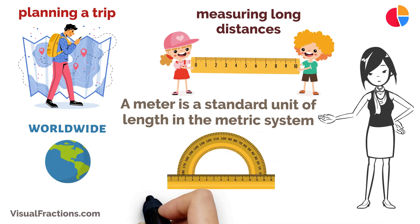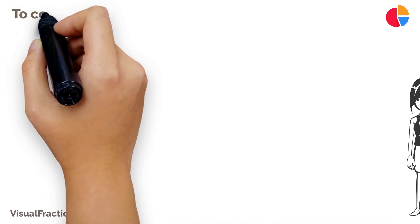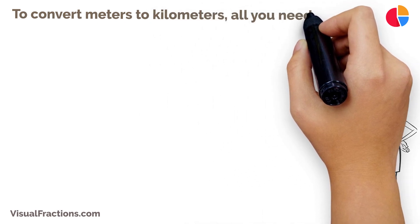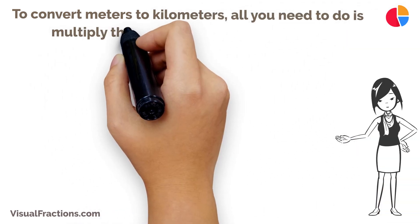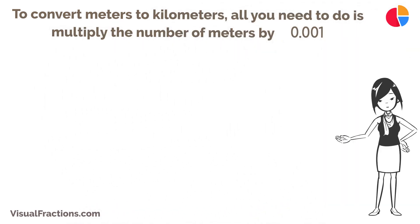Here's the simple part. One meter is equal to 0.001 kilometers. To convert meters to kilometers, all you need to do is multiply the number of meters by 0.001.